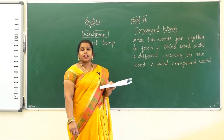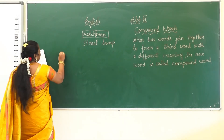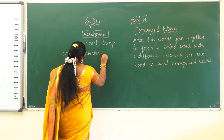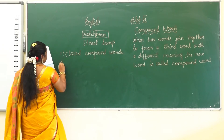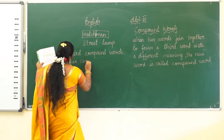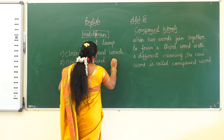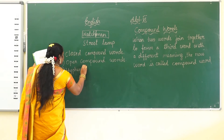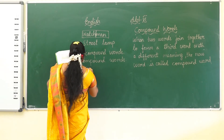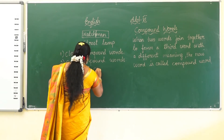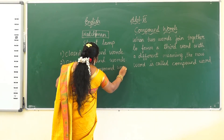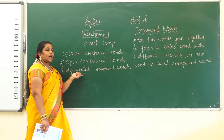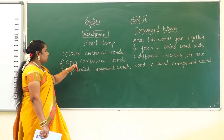Now, there are three types of compound words. First one: closed compound words. Second one: open compound words. And the third one: hyphenated compound words. Closed, open, and hyphenated.